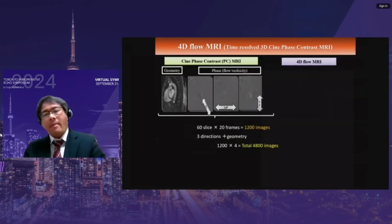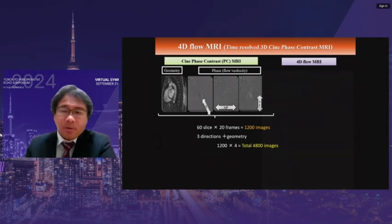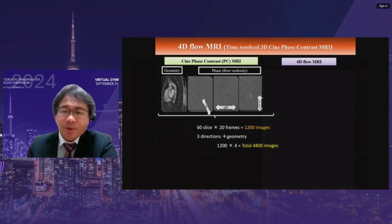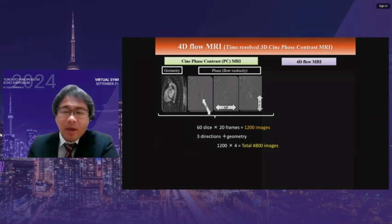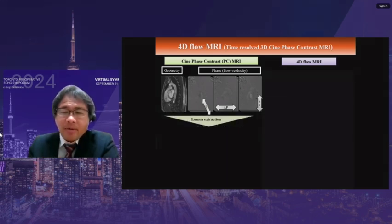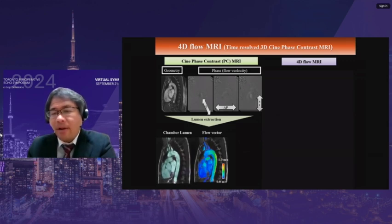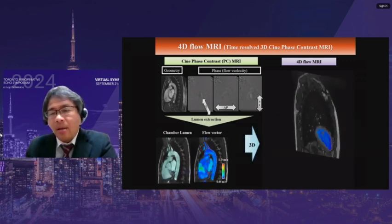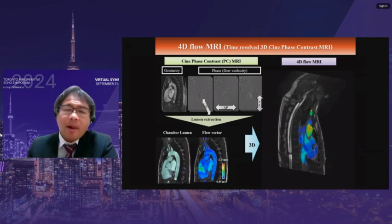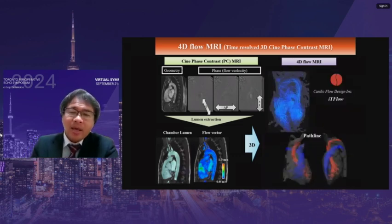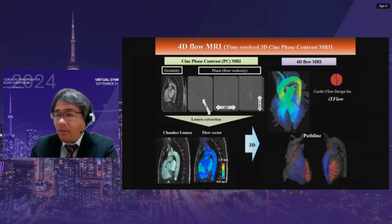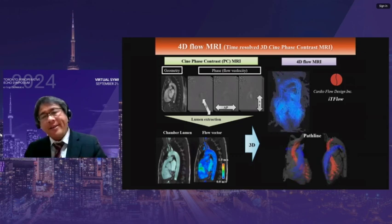4D flow MRI is based on a modal MRI named phase contrast, or PC MRI, which can measure the blood flow velocity distribution in arbitrary directions of the magnetic gradient field. When we segment the cardiovascular lumen, we can reconstruct the blood flow velocity vectors. Because MRI has accumulated slices, 3D flow streamlines or pathlines with pulsation are visualized. This is 4D flow MRI.